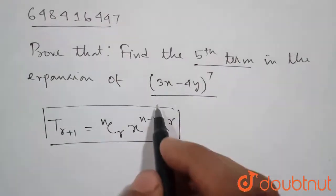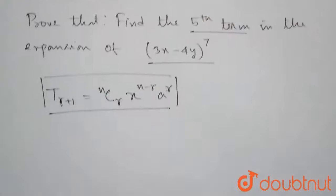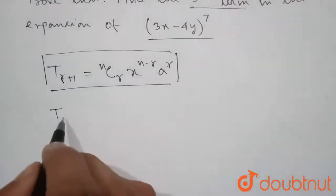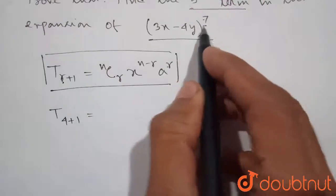Here we need to find the 5th term. So the value of r should be 4 because 4+1 will be 5. So we can write T(4+1) is equal to n is equal to 7 here.